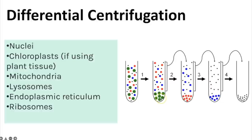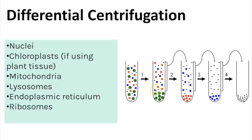The order of density in ultracentrifugation is: nuclei are the most dense and isolated in the first spin; next are chloroplasts and mitochondria; then lysosomes; then endoplasmic reticulum; and finally ribosomes. This is the order in which you collect your different organelles.